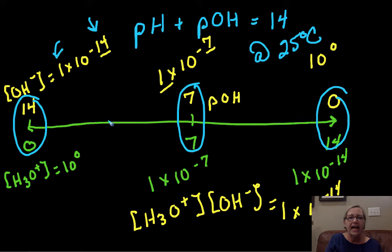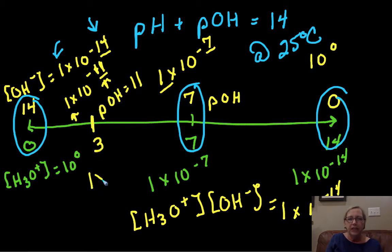So if I had here 1 times 10 to the minus 11, then my pOH would be 11. There's a 1 in front, so all you have to do is take the power. So my pOH would be equal to 11 there. If my pOH is 11, then this is a 3. My H+ is 1 times 10 to the minus 3. And hopefully you see that link with those powers.